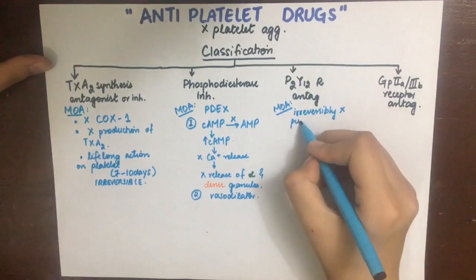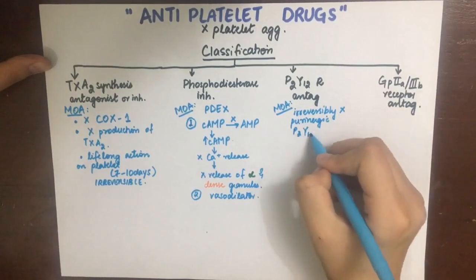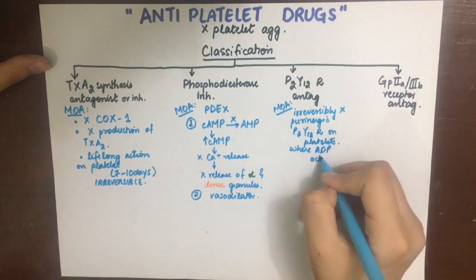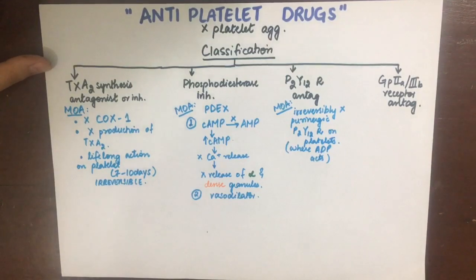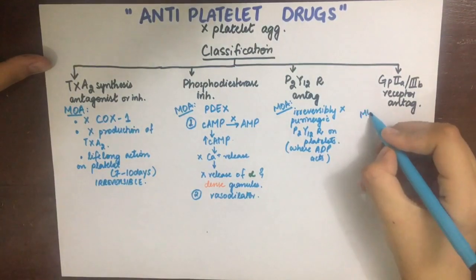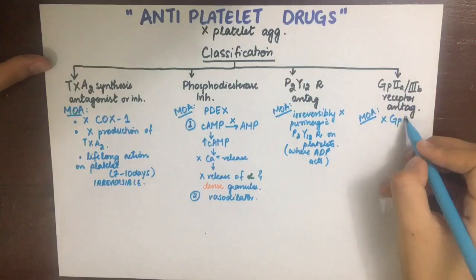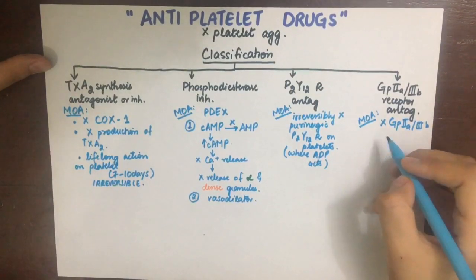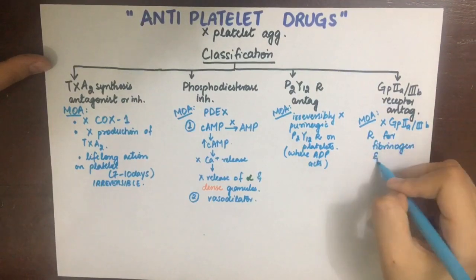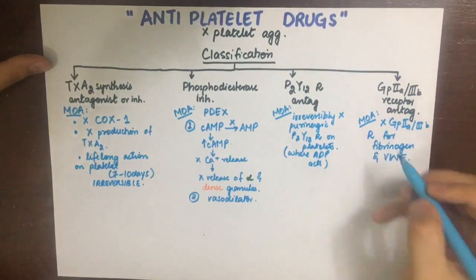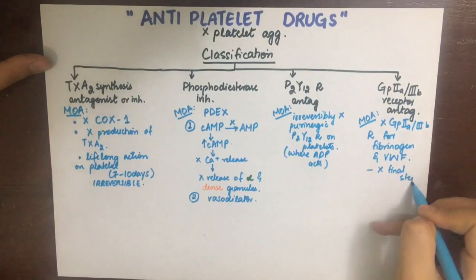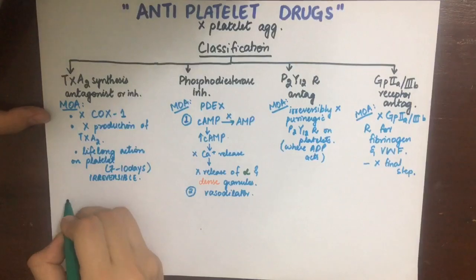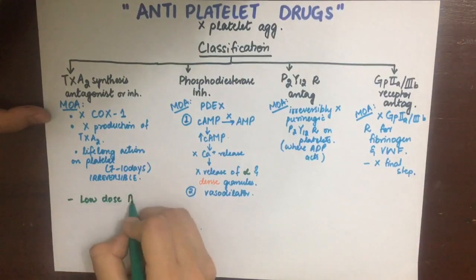P2Y12 receptor antagonists irreversibly inhibit the purinergic P2Y12 receptors on platelets, where ADP would normally bind and cause platelet aggregation — that can no longer happen, so they block the action of ADP on platelets. GP2b3a receptor antagonists block the GP2b3a receptor for both fibrinogen and von Willebrand factor, thus inhibiting the final step of platelet aggregation.